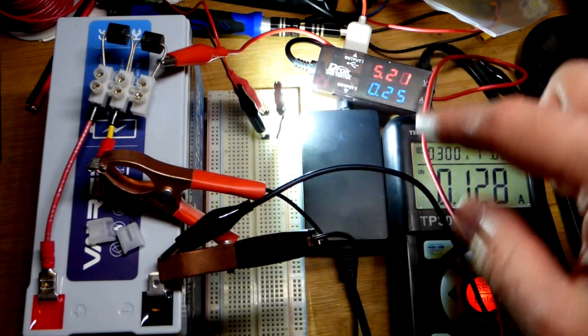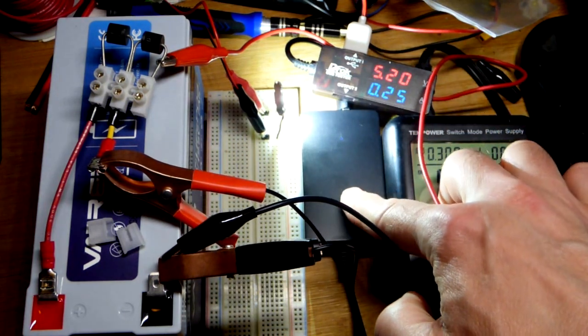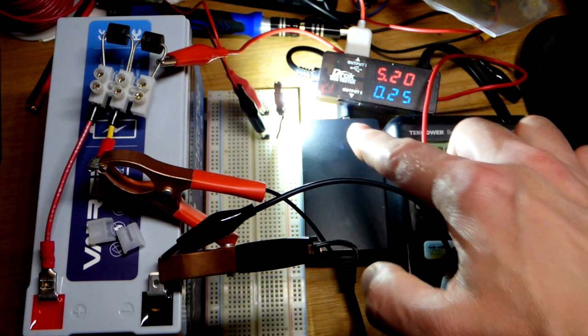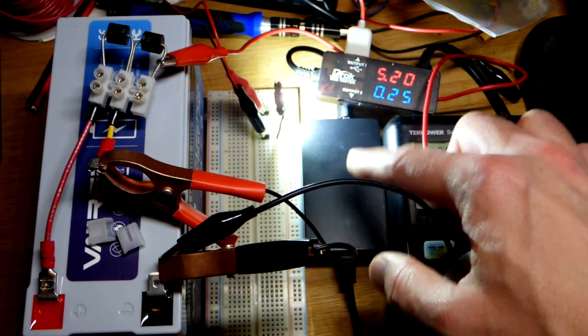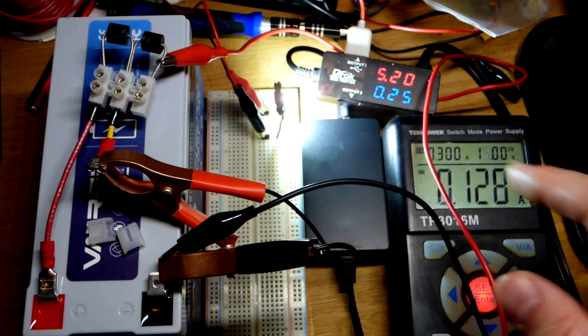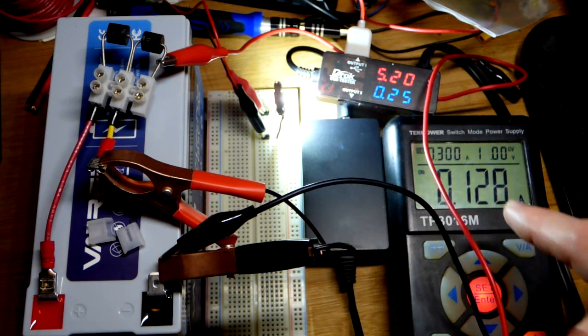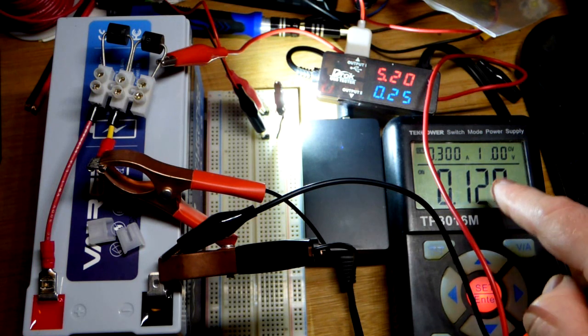This is a buck converter, these two big alligator clips go to this unit here. It takes a higher voltage and outputs a lower voltage, but it doesn't just add resistance and create waste heat. It actually converts that higher voltage into more current out than what you have to put in.